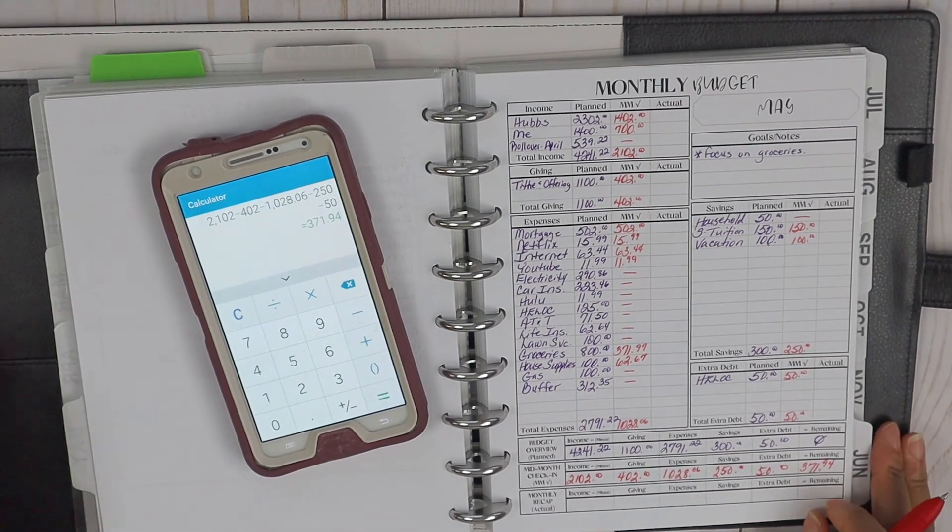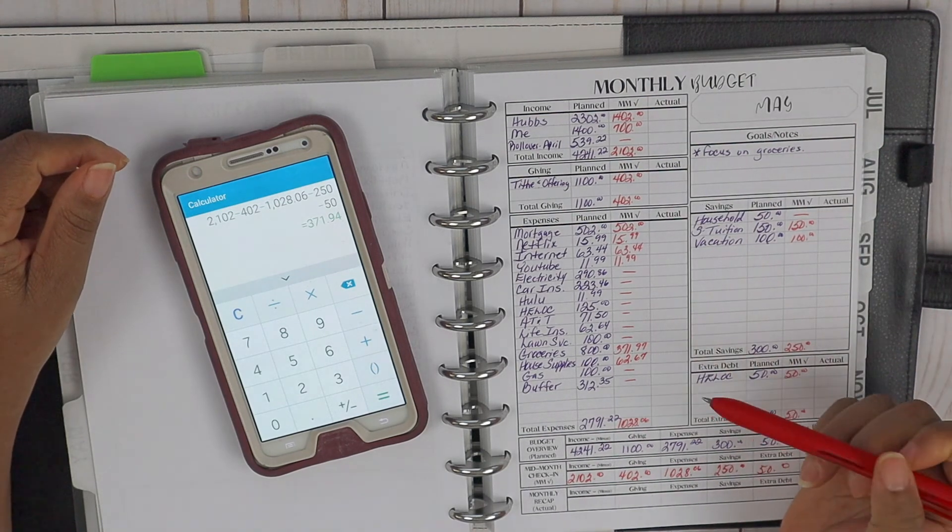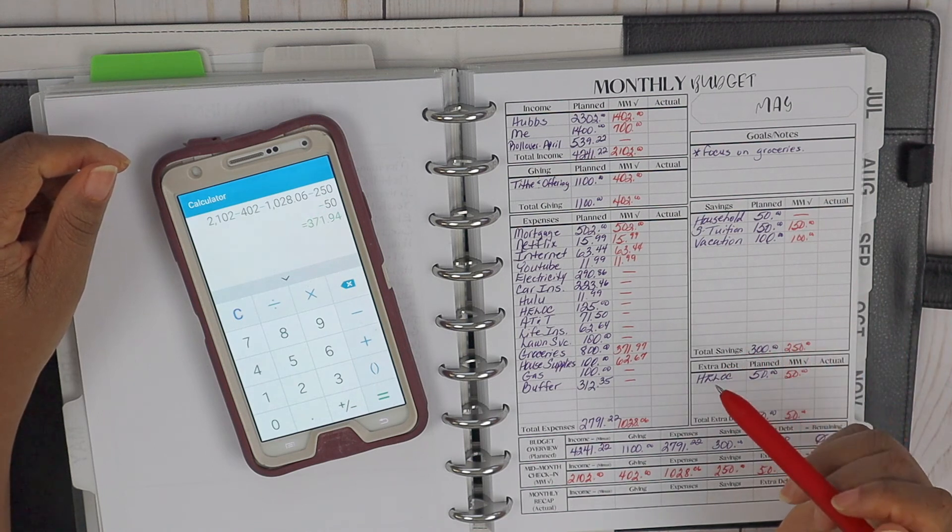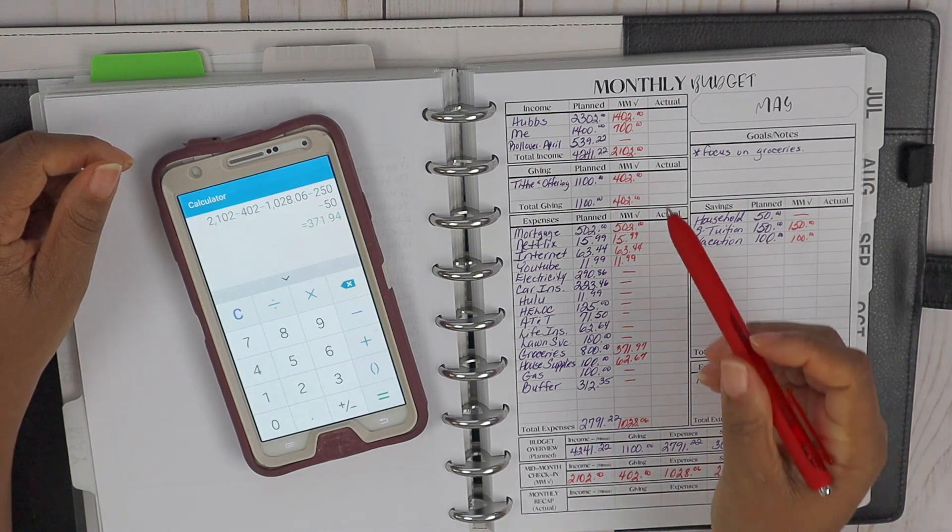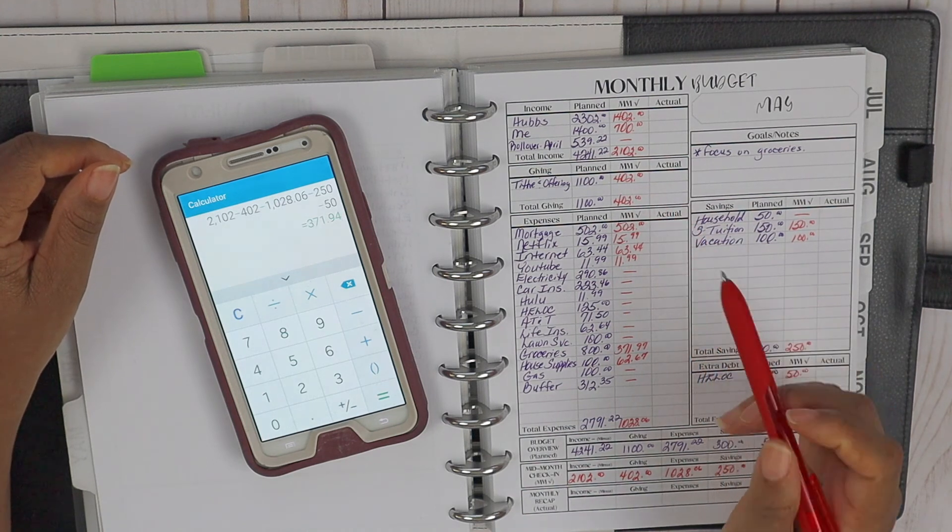So we are looking really good thus far for mid-month check. Again, we came in below at the groceries, which we are super excited about that. And so we are definitely below for the giving thus far, so hopefully we can end May on a positive note.